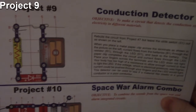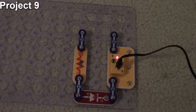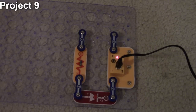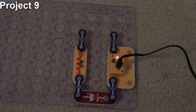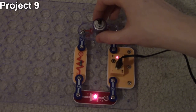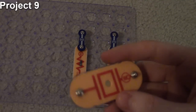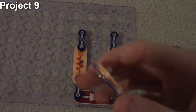Project nine is a conduction detector. The objective is to see what kinds of materials are conductive — if they are, the LED will light up. It looks just like project seven, but with the slide switch removed. For example, placing the electric motor in the circuit — it's conductive, current flows through it and lights up the LED. The whistle chip, however, has very high resistance and very little conductance.